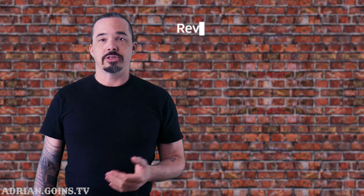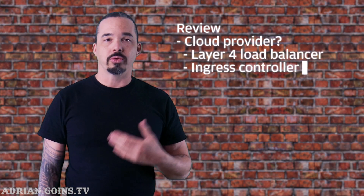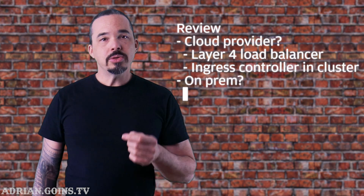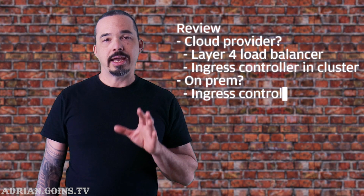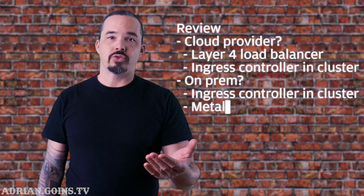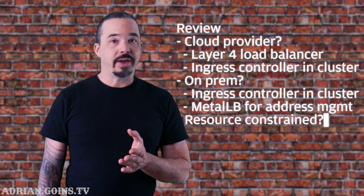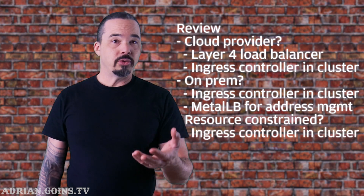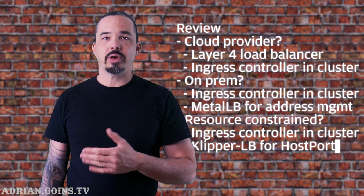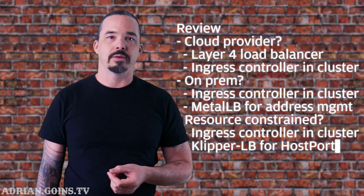Let's recap. If you're in a cloud provider, you can use a Layer 4 load balancer and send all traffic to an ingress controller running on the cluster instead of burning money on a load balancer for every single workload. If you're on-prem, you can use MetalLB with a pool of IP addresses to handle load balancer services, and put it in front of an ingress controller to give you Layer 7 decision making for HTTP workloads. If you don't have a bunch of addresses, or if you're running a single-node cluster, or if you have ARP restrictions, you can use KlipperLB to open a host port and route it to the correct ClusterIP service inside the cluster. This makes it easy to swap out the nginx ingress controller for Traefik, which then leads to using Maesh as a lightweight service mesh in the cluster — I'll have that for you in a future video.